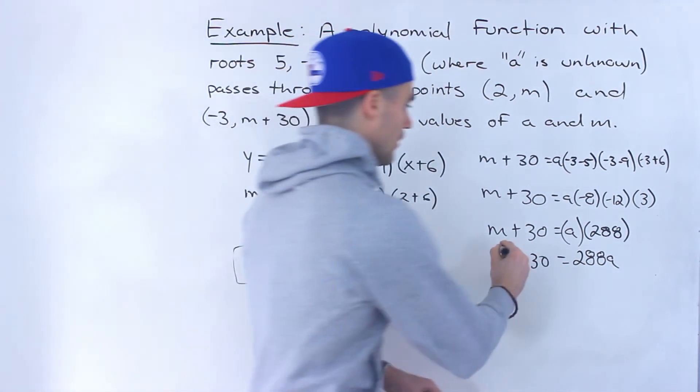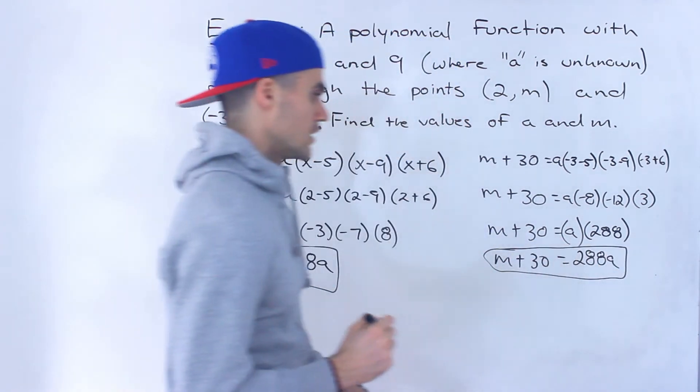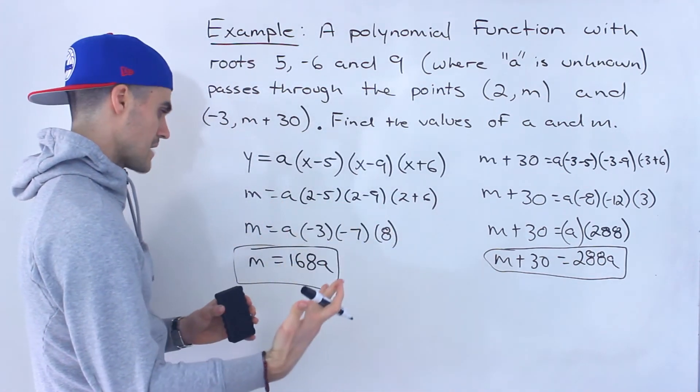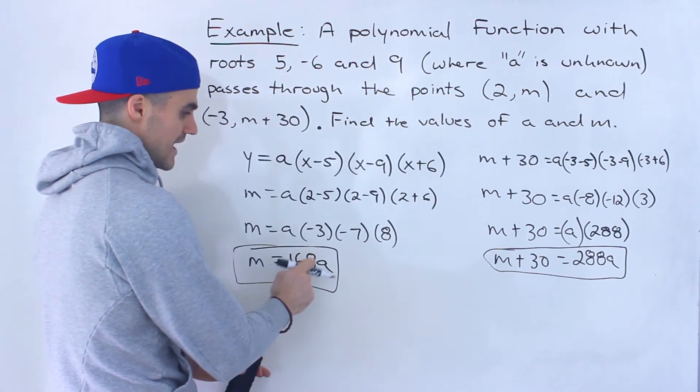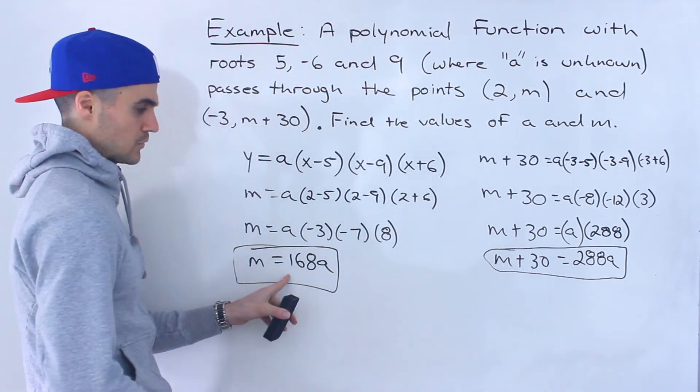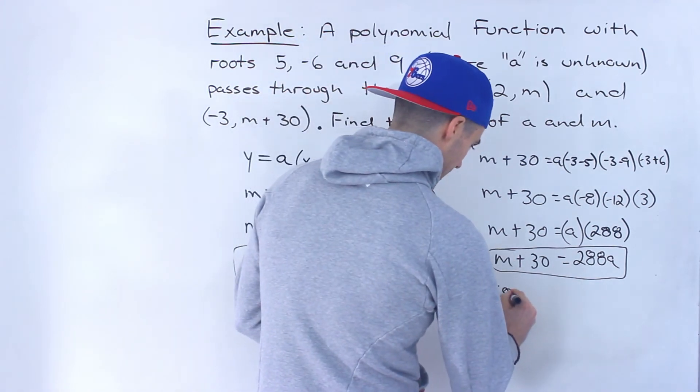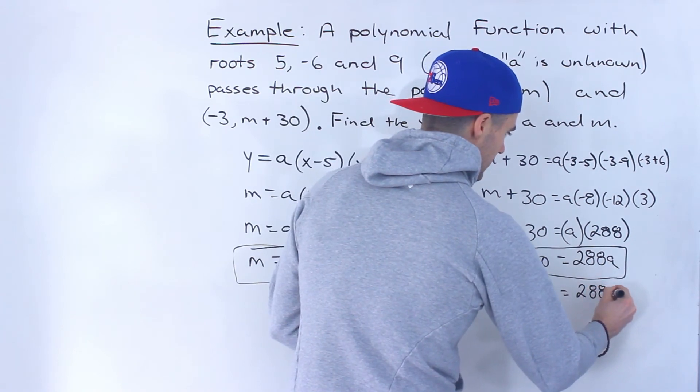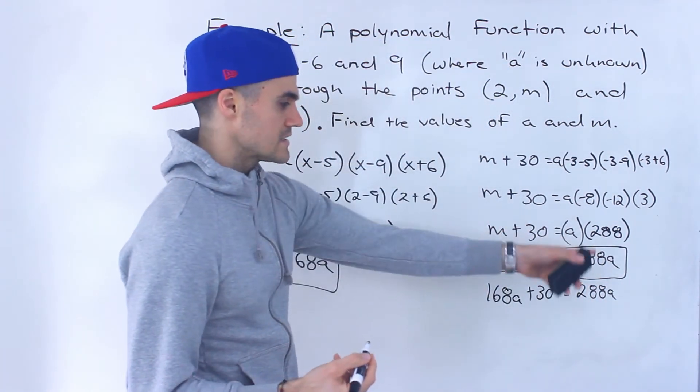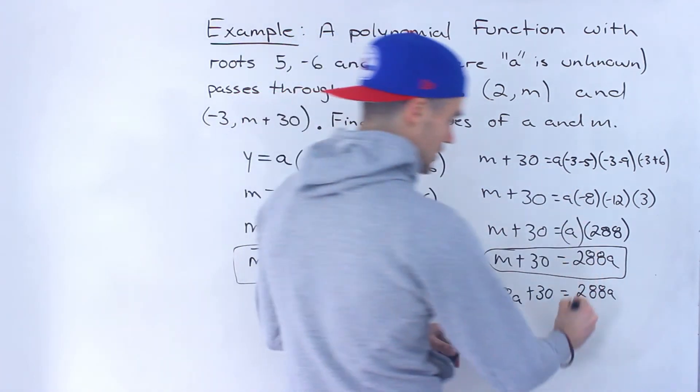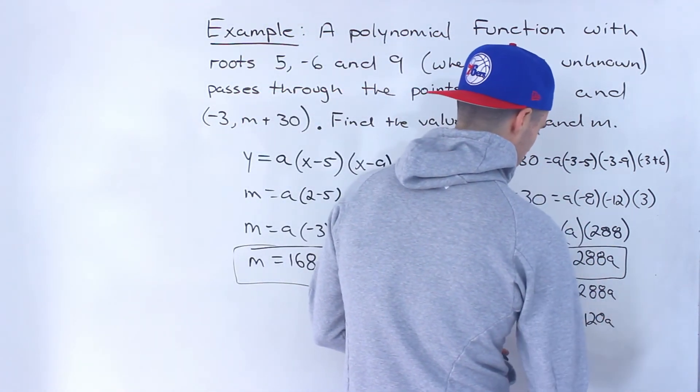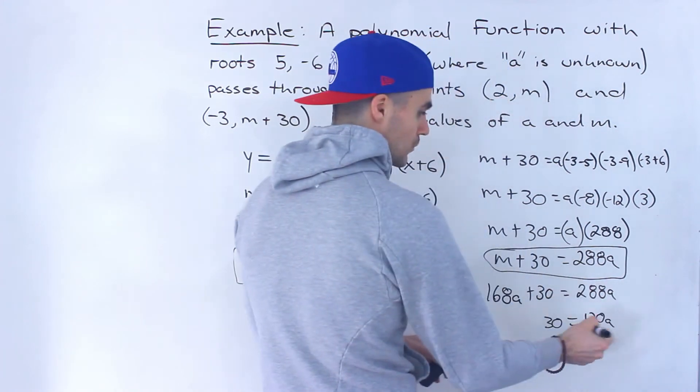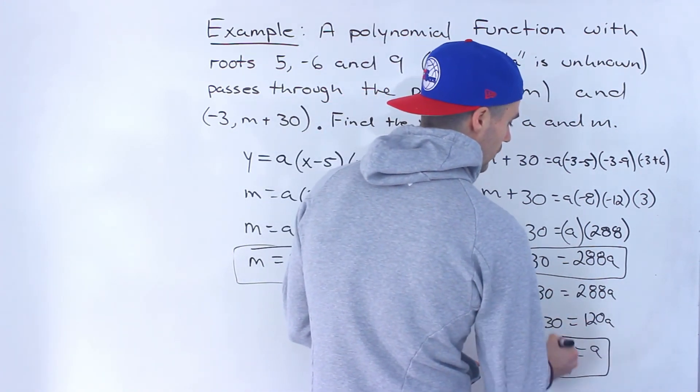And so this is our other second equation. So now what we can do we got these two equations we could solve for M and A and notice that the obvious step here would be I think to plug in 168A for this M value because M is equal to 168A. So we'll have 168A plus 30 equals 288A. And now we could solve for A. We could bring 168 over. We'll have 288 minus 168 which gives us 120A. Then we got a 30 here. Divide both sides by 120, A would end up being 30 over 120 which simplifies to 1 over 4.